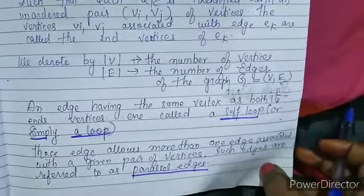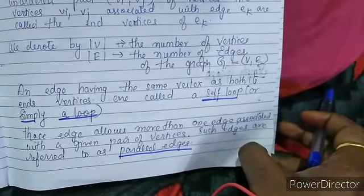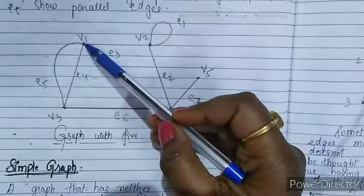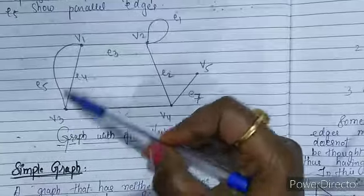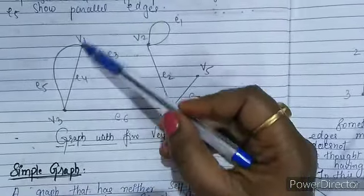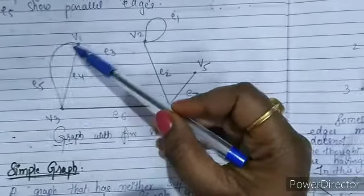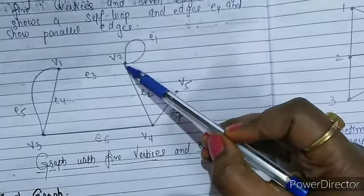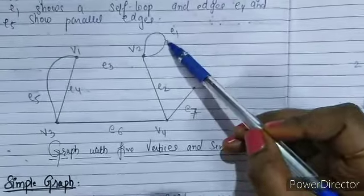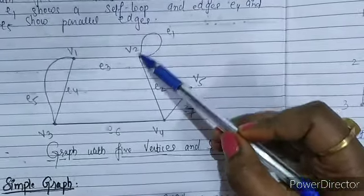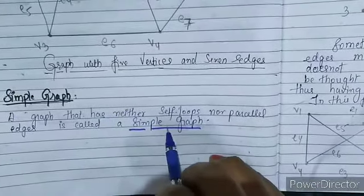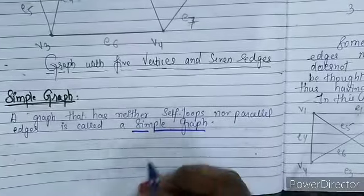An edge having the same vertex at both ends is called a self-loop. Those edges that allow more than one edge associated with a given pair of vertices are called parallel edges. For example, V1 and V3 form a pair of vertices for edge E4, and similarly V1 and V3 for edge E5 — so E4 and E5 are parallel edges with the same vertex pair. An edge looping back to the same vertex is called a self-loop.